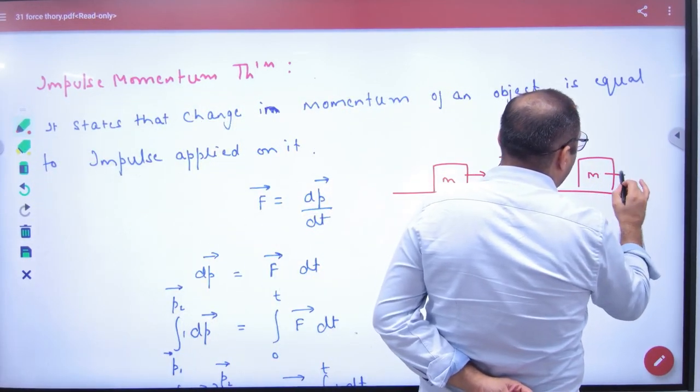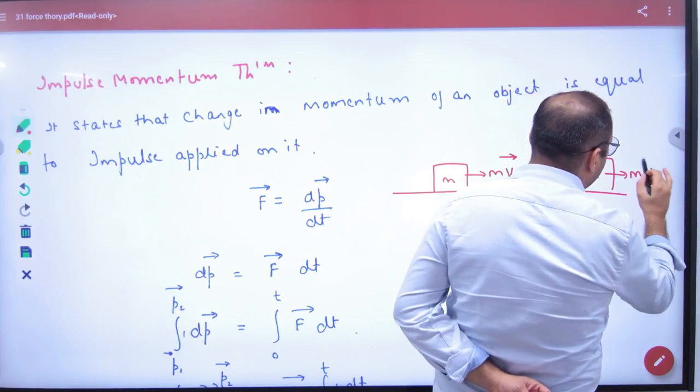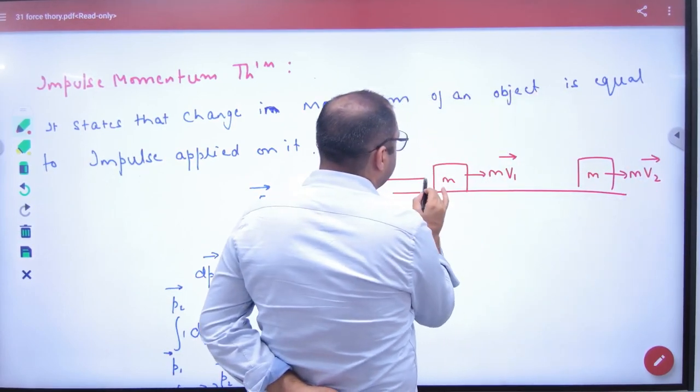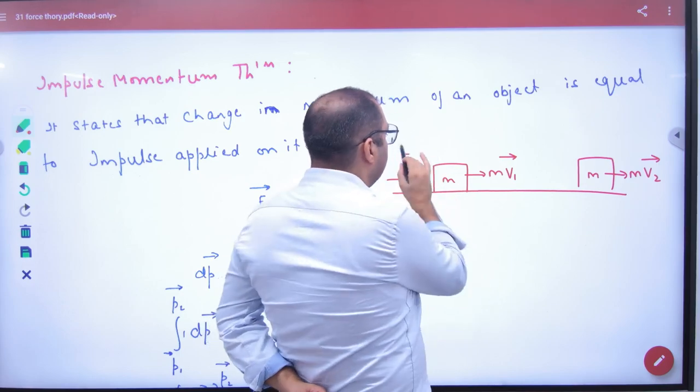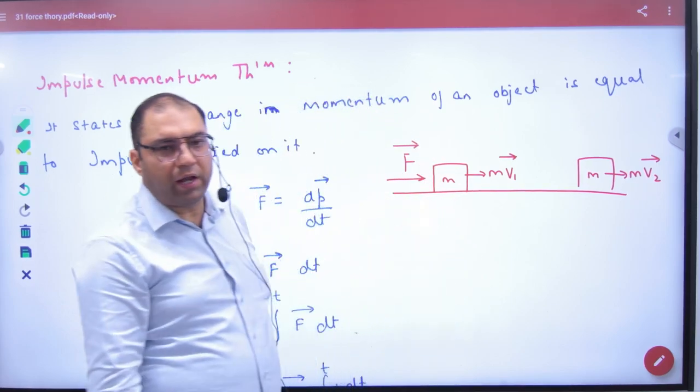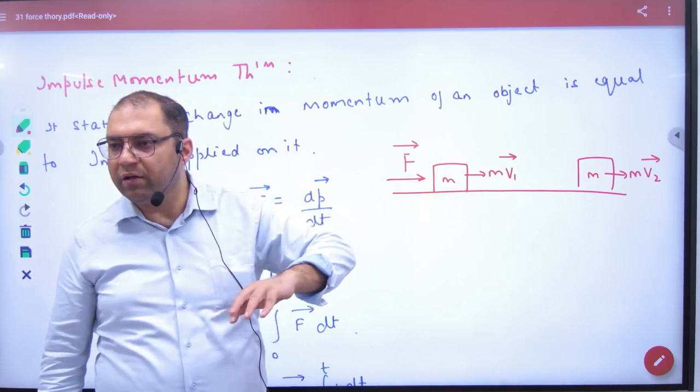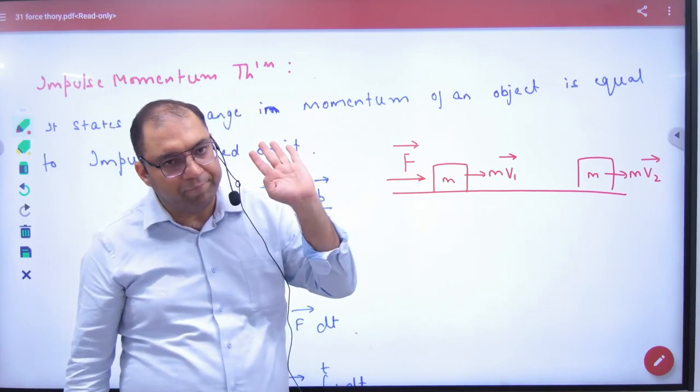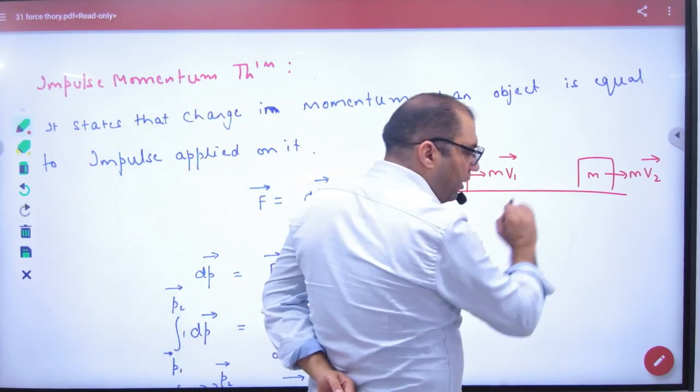So its final momentum is mv2 vector. What was put on it? Force vector. The momentum has increased. What happened from initial to final?